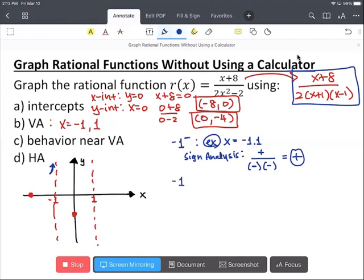Now we can look at negative one from the right and choose a value like x equal negative 0.9. And for sign analysis, we know that we're going to have positive value for numerator. And then x, which is negative 0.9 plus one gives us positive. And then negative 0.9 minus one gives us negative. Multiply them that we have negative value. And as x approaches negative one from the right, y approaches negative infinity.